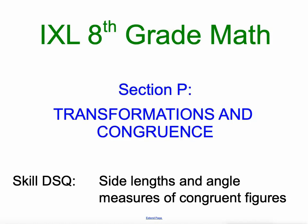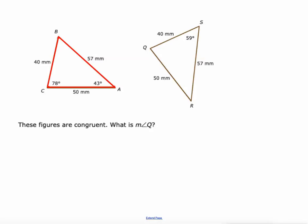Hey everybody, Mr. Kaczynski here. We are all the way into skill P15 in the section on transformations and congruence in IXL's eighth grade math, dealing with side lengths and angle measures of congruent figures. All right, so here's our first pair of congruent figures. We're trying to figure out the measure of angle Q.